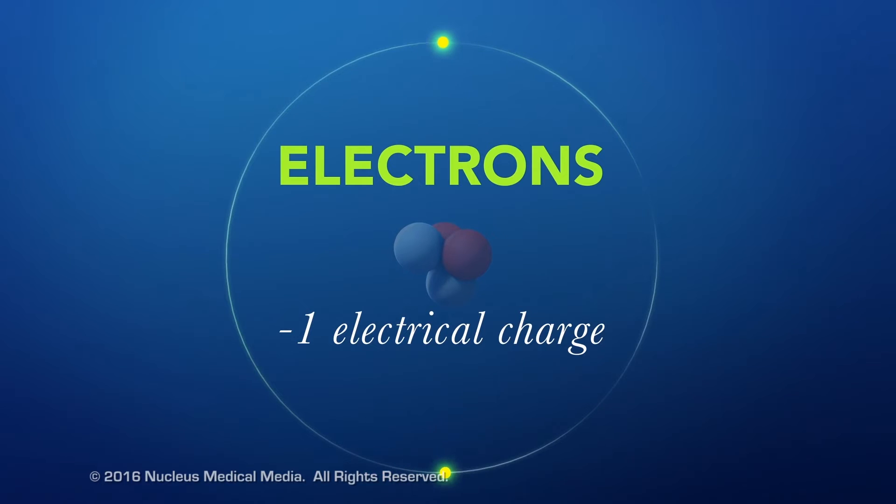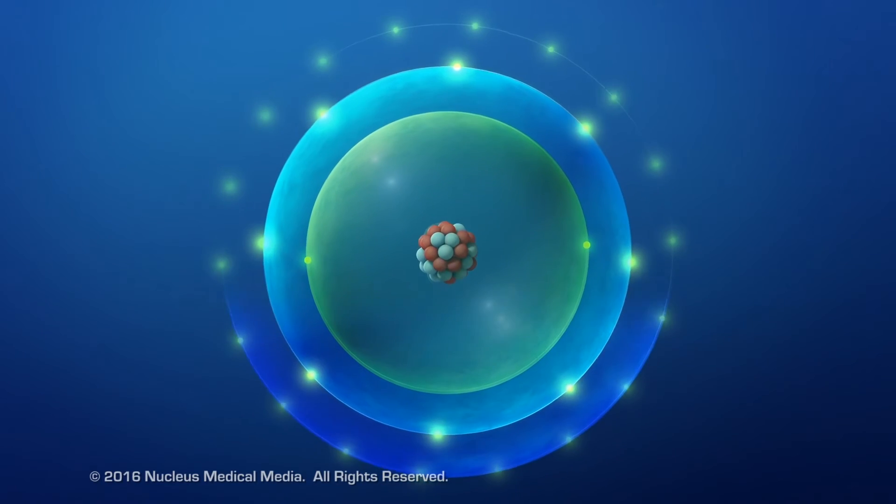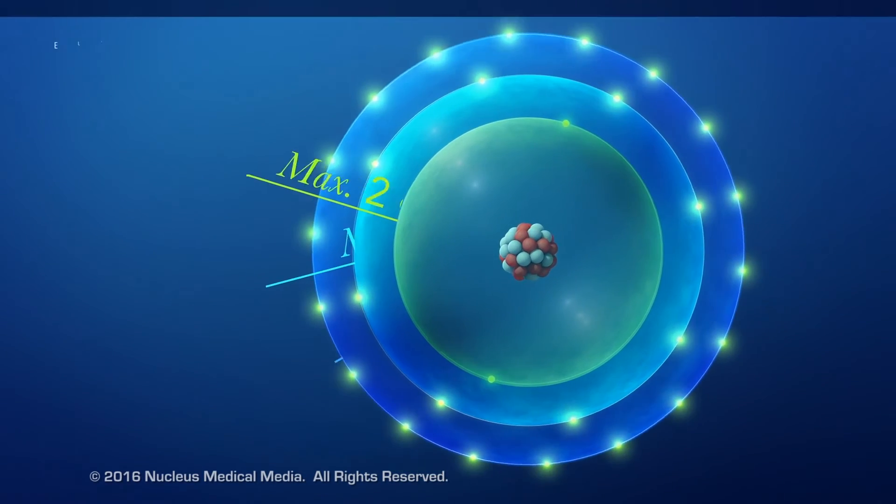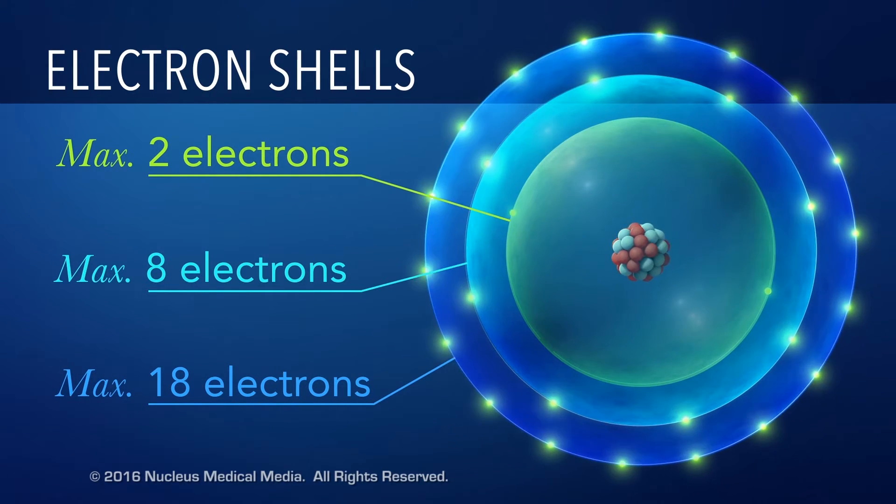Even though electrons are always outside the nucleus, they're found in layers called energy levels or shells around the nucleus. Each electron shell or energy level has a maximum number of electrons it can hold.